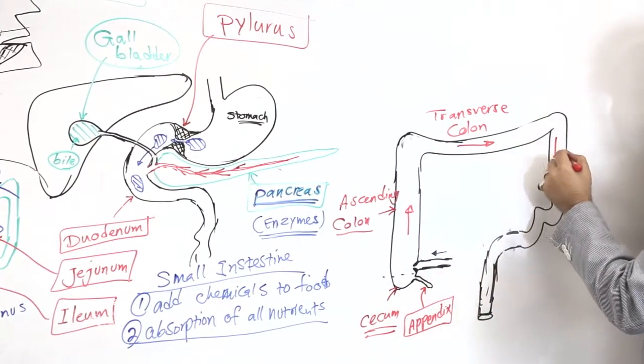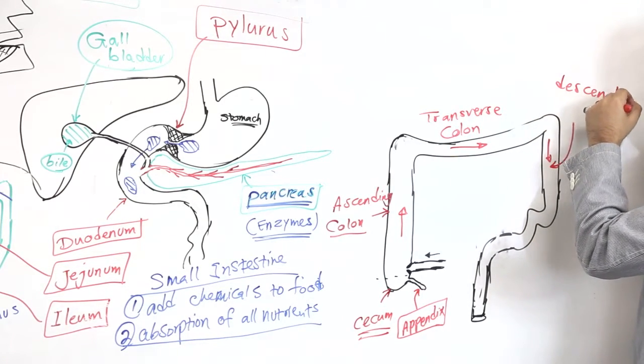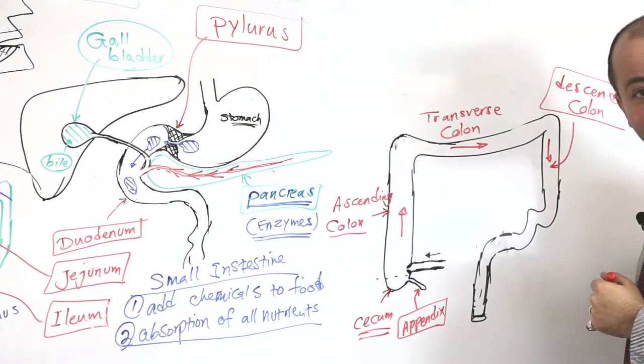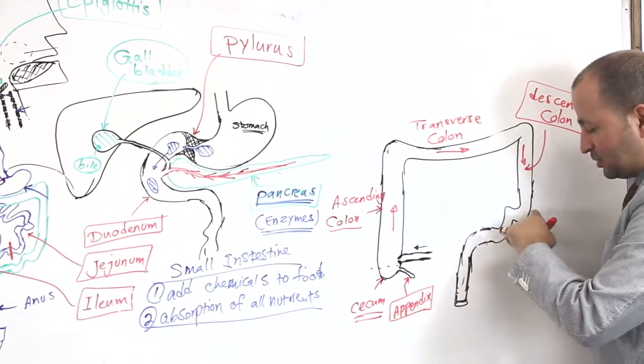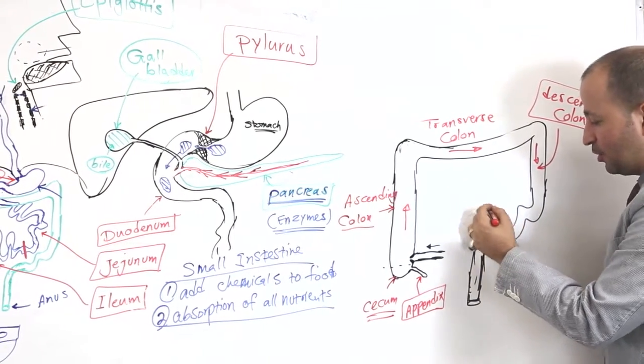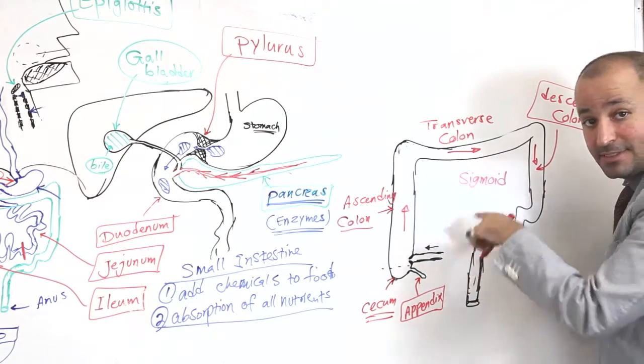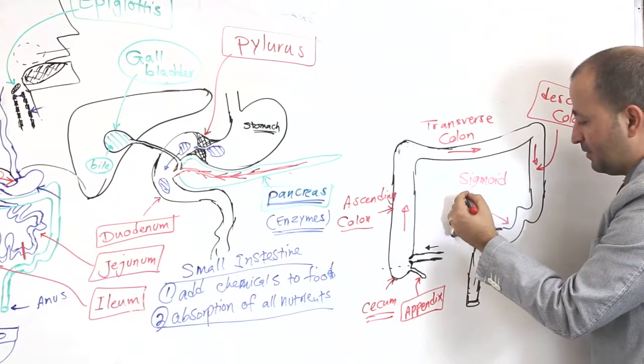And then it's going downward. We call it what? We call it descending colon. Very good. And then you go here. There is an S-shape colon here. Because it's S-shape, we call it sigmoid. The word sigmoid means S-shape. Sigma shape. Sigma is like S. Sigmoid colon.